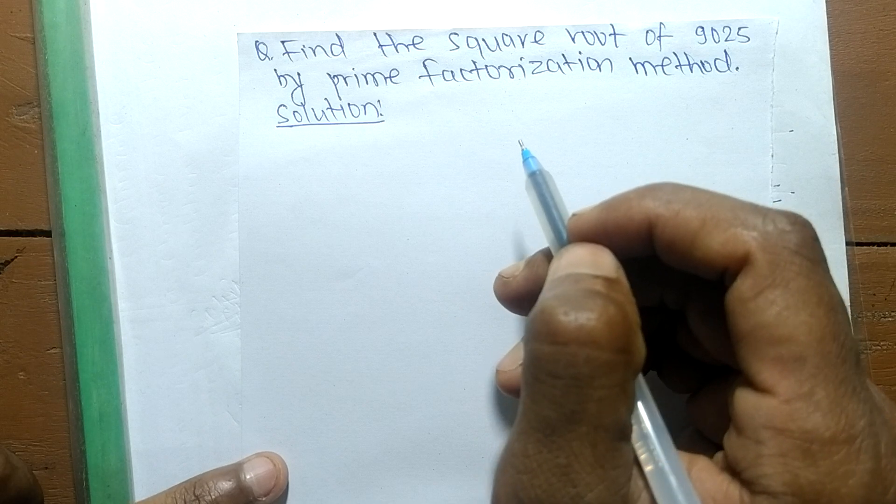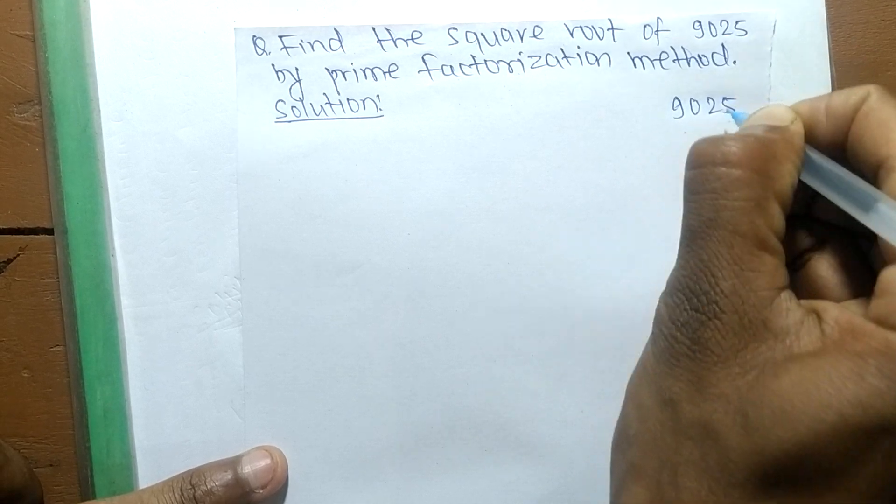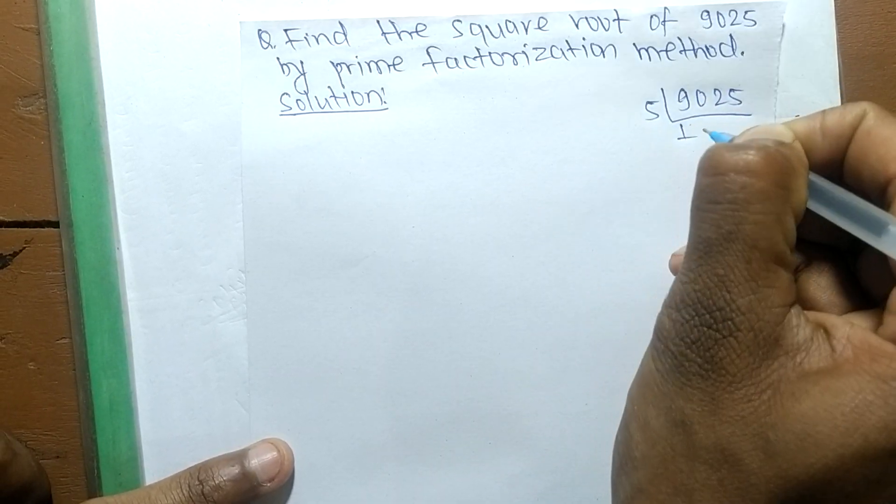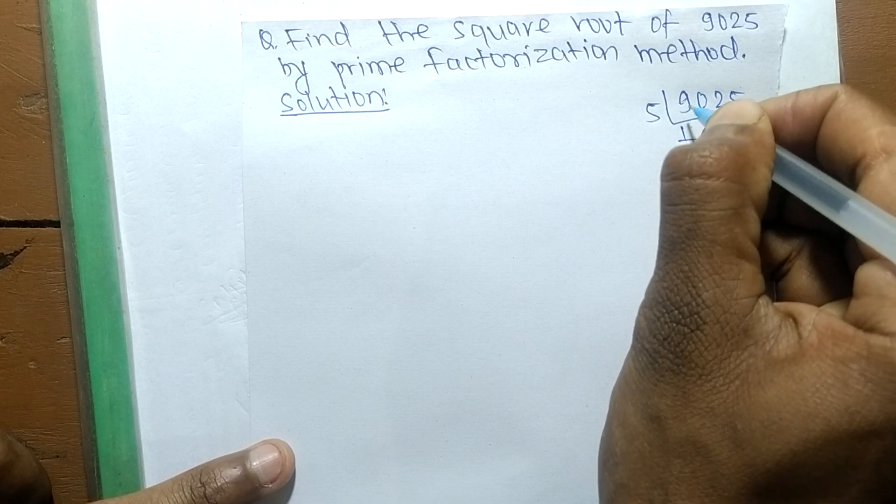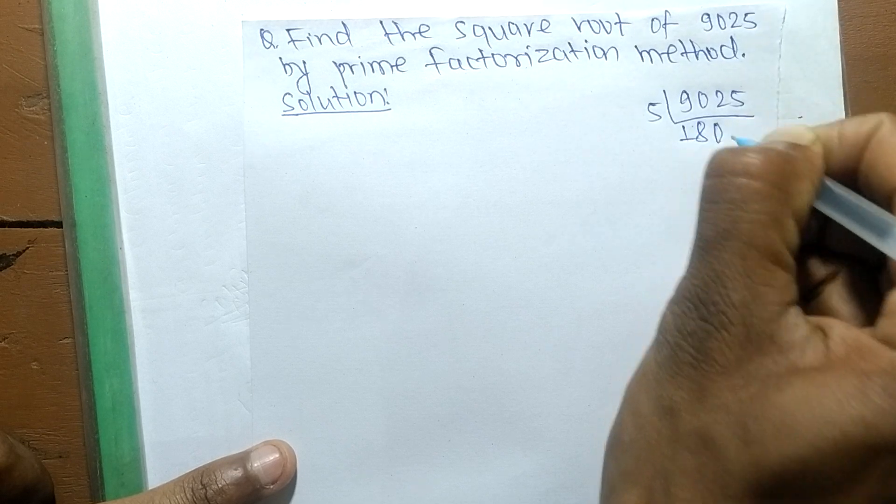To find the square root, first we have to find the prime factors of 9025. It is 5 times 1, which is 5, remainder 4. 40 divided by 5: 5 times 8 is 40, remainder 0, and bringing down 5.